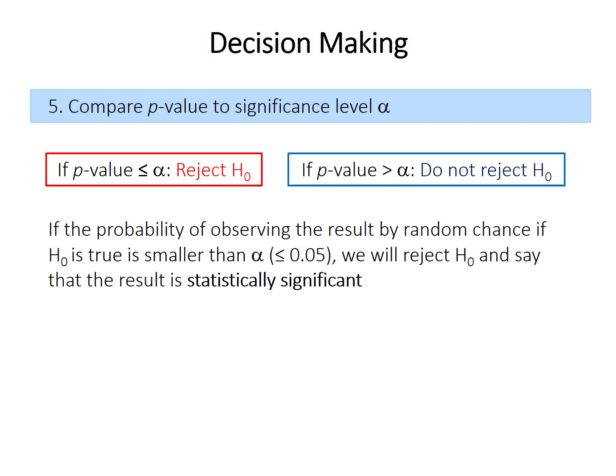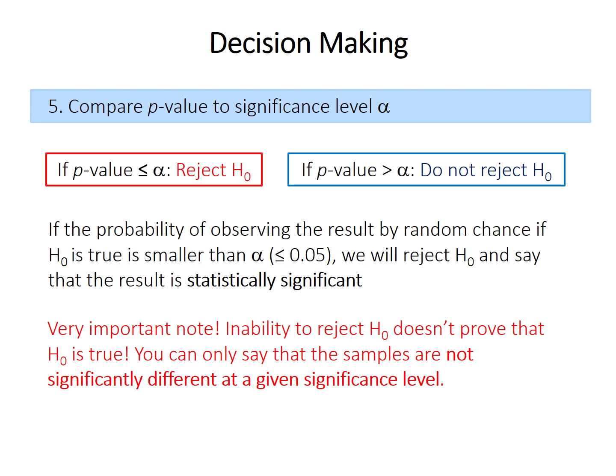So if you reject the null hypothesis, we will say that the difference between samples, or whatever you're testing for, is statistically significant. Note that we can never prove or accept the null hypothesis. If we fail to reject the null hypothesis, it's not correct to say that the samples are the same. You should only say that there's no significant difference. Your comparison is either significantly different or not significantly different. You can never say that they're the same.